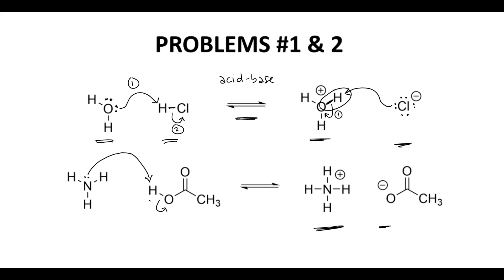Now we have four NH bonds on our nitrogen, and this oxygen would have an extra lone pair. It started with two, and now it's going to finish with three lone pairs and have a formal charge. This again is a reversible acid-base reaction. To go backwards, we could have our oxygen lone pair reach over and grab that NH, and that would break that NH bond, becoming a lone pair on the nitrogen in the starting material.